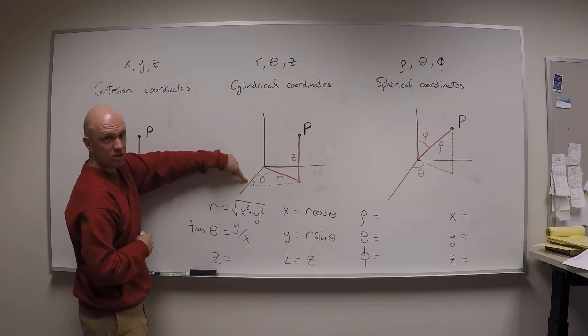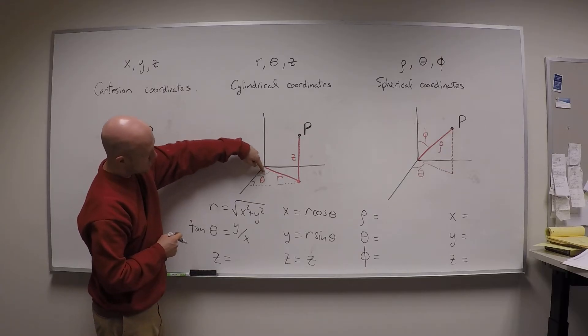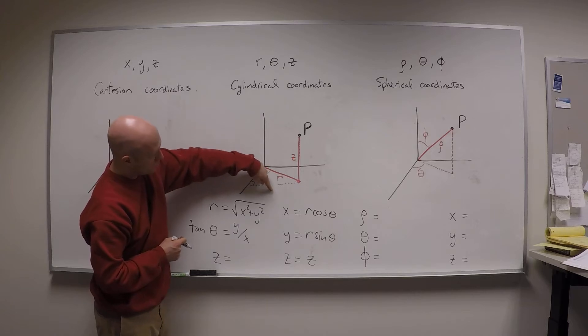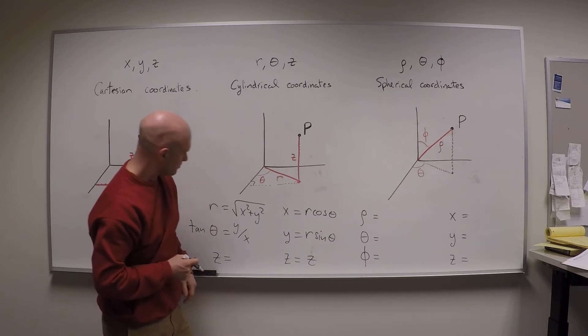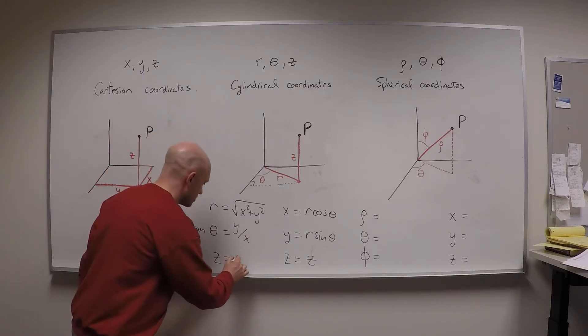I think about dropping a perpendicular down here to the x axis, that's going to make a right angle. And then theta, the tangent of theta is the opposite over the adjacent, and that's going to be the y coordinate over the x coordinate. Z is still just z.